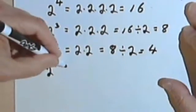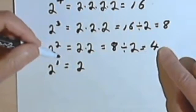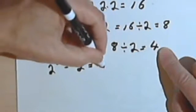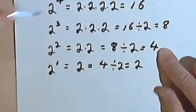So 2 to the 1st, doing the same thing, is just a 2, or we could think of it as 4 divided by 2. That's going to give us a 2.